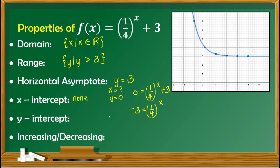Another reason is we cannot have a negative base in an exponential function. For the y-intercept, as we can see on the graph, there is a point that passes through the y-axis at (0, 4). Therefore the y-intercept is (0, 4). Solving it algebraically, it is the value of y when x is 0.